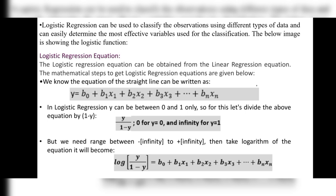To constrain y between 0 and 1, we divide the equation by (1 - y). Then, to get a range from negative infinity to positive infinity, we take the logarithm of the equation, giving: log(y / (1 - y)) = b0 + b1x1 + b2x2 + b3x3 + ... + bnxn. We use log(y / (1 - y)) to get the regression value between 0 and 1, and also to extend the range to minus infinity to plus infinity.